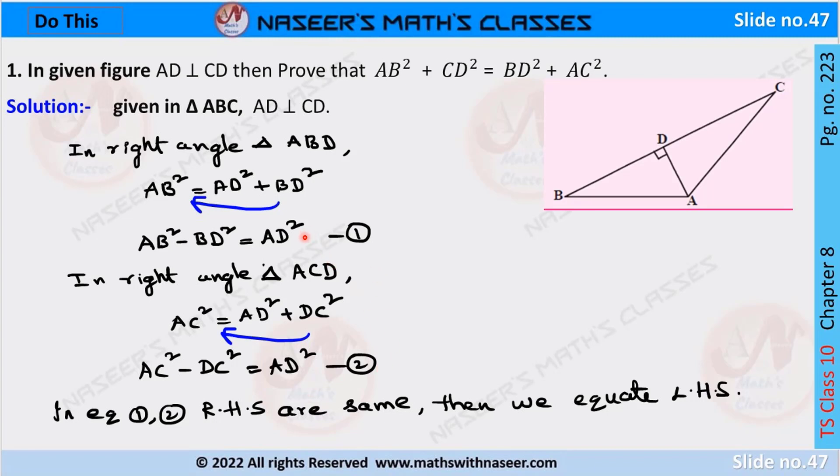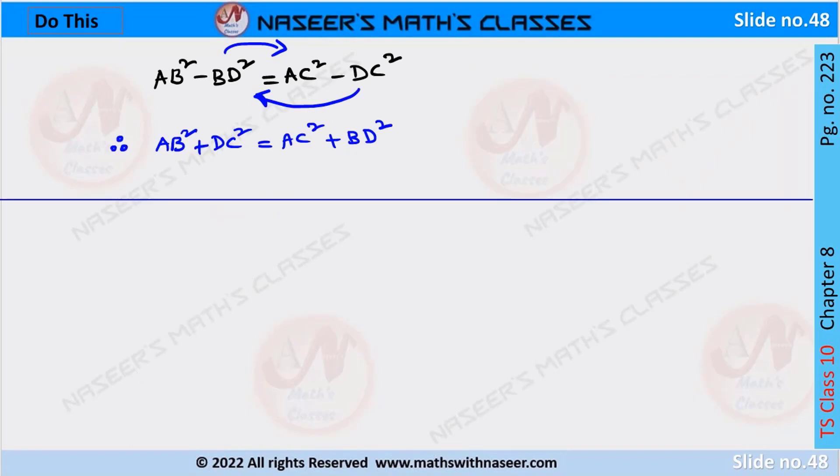In equations 1 and 2, RHS are equal, then we can equate the LHS. Written as AB square minus BD square is equal to AC square minus DC square.